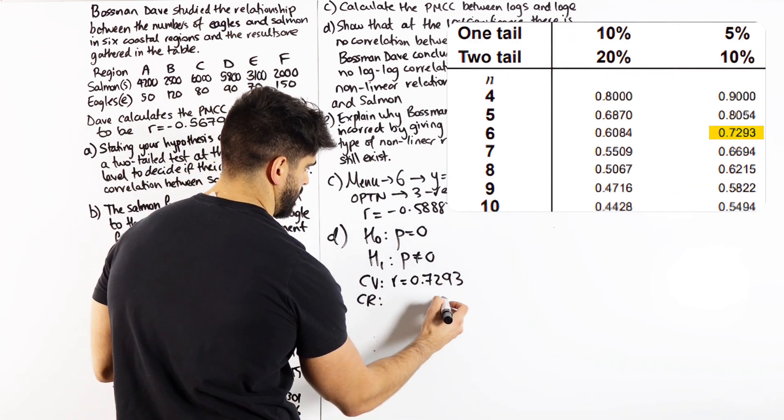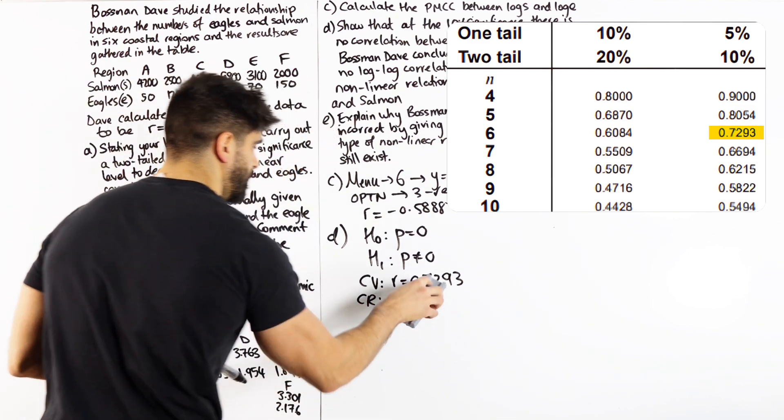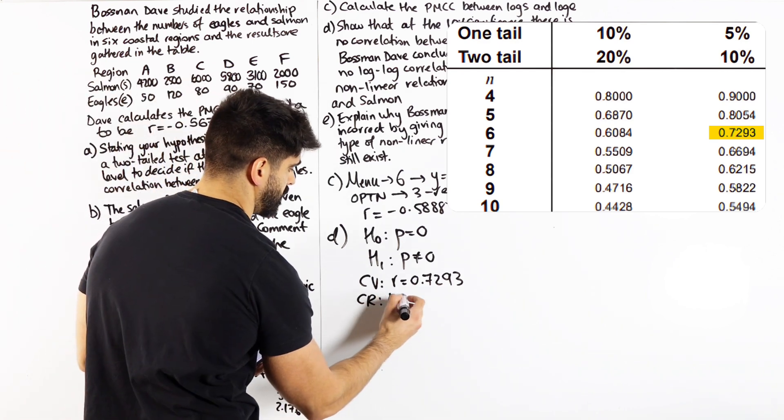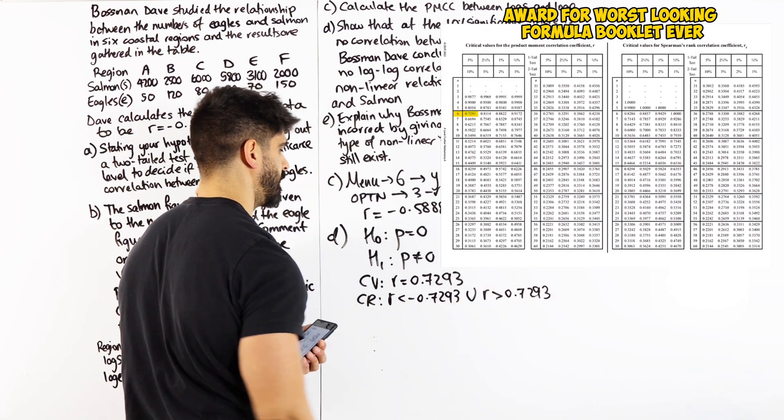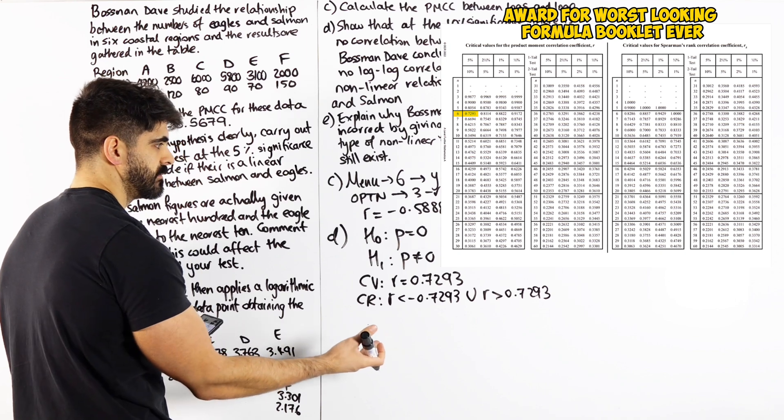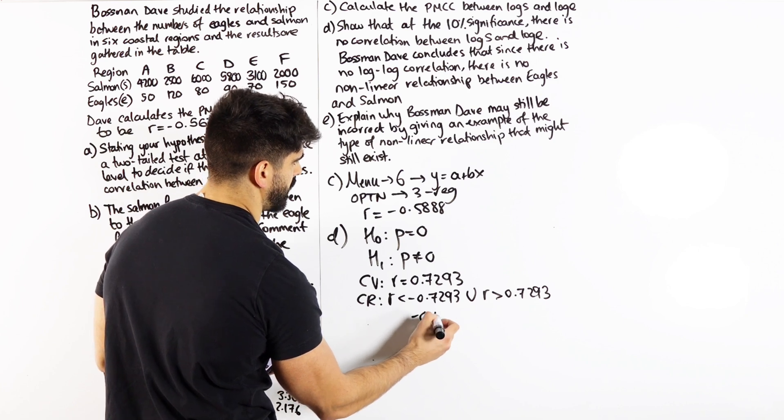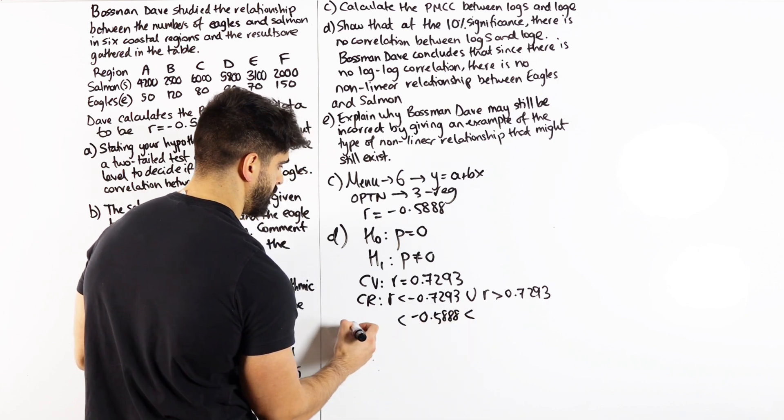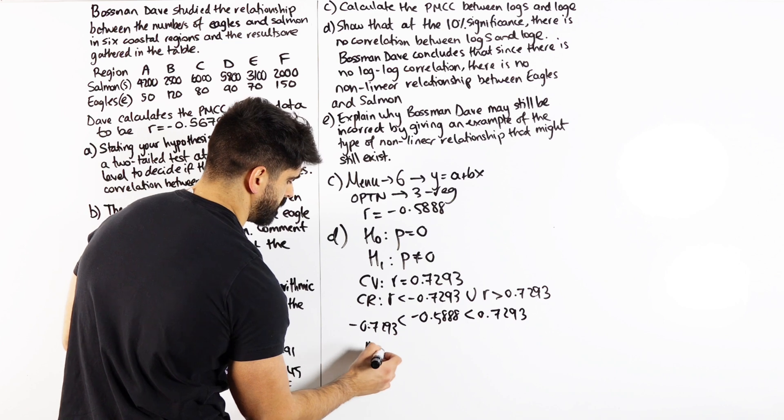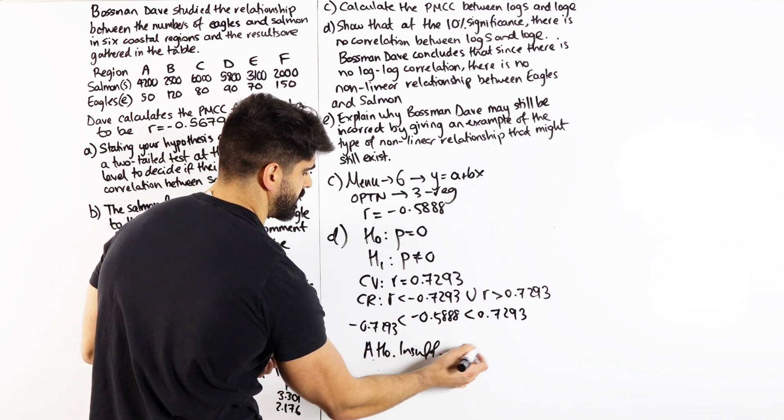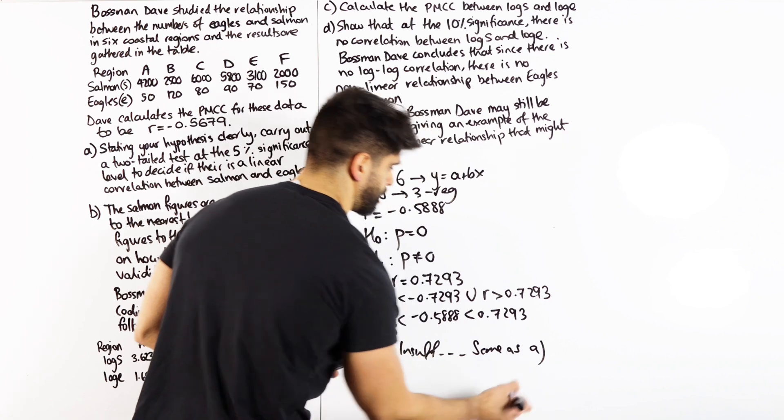So my critical region is any R value less than negative of this, or R is bigger than the positive. So we're going to say minus 0.5888 is between minus 0.7293 and 0.7293. So we're going to accept H0, then insufficient evidence to suggest, it's the same as part A.